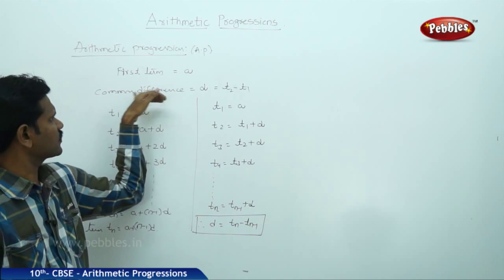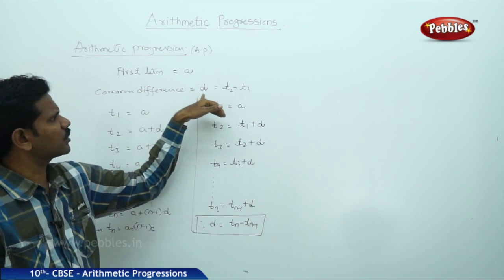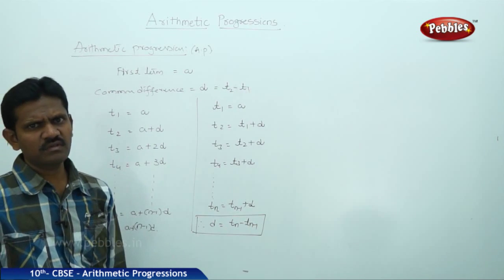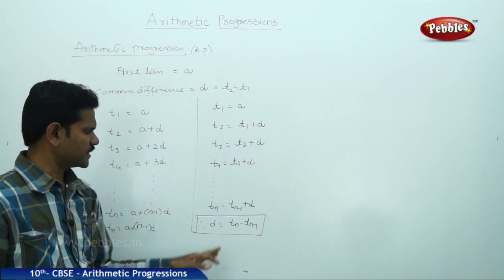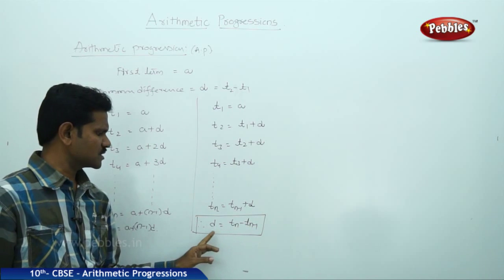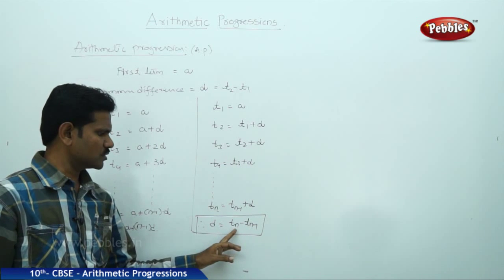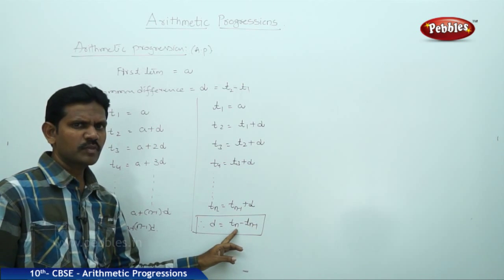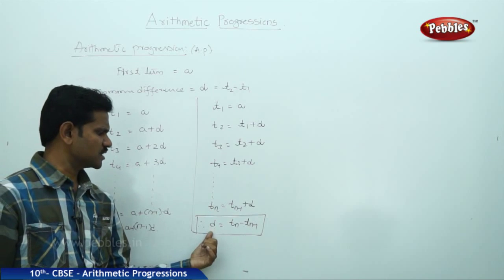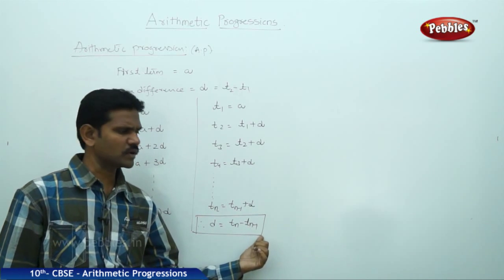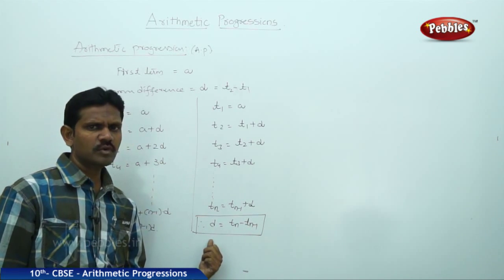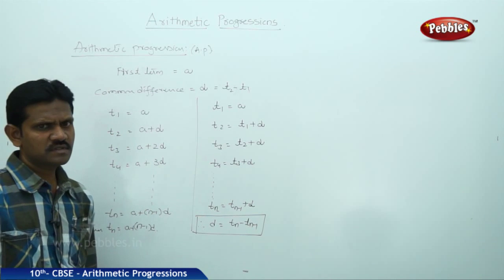As mentioned at the very beginning, the common difference formula is d equals t2 minus t1. If we substitute n equals 2 in the general formula tn minus tn minus 1, we get d equals t2 minus t1. This is the general formula to find the common difference.